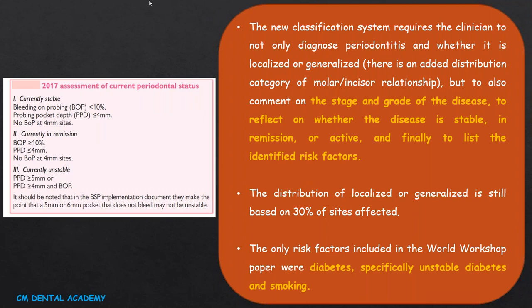The new classification requires the clinician to not only diagnose periodontitis and whether it is localized or generalized, but also to comment on which stage it is, whether the disease is stable, in remission, or in active phase, and to list the identified risk factors. Distribution is still based on 30% of sites affected — 30% or less is localized, more than 30% is generalized. Risk factors included in the World Workshop paper were diabetes, especially unstable diabetes, and smoking.